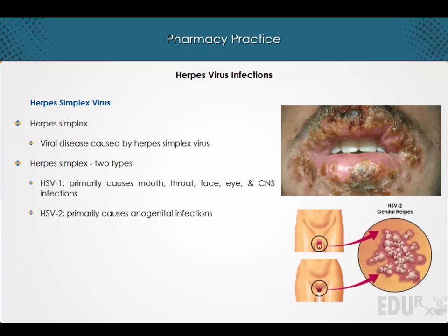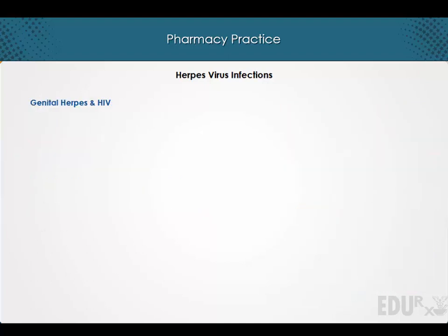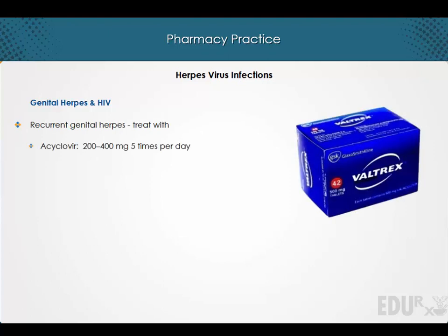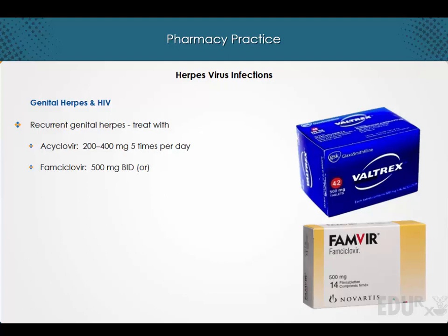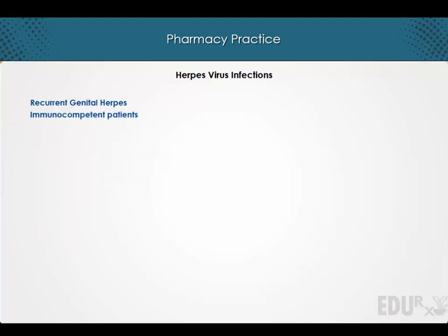Herpes simplex virus type 2 primarily causes anogenital infections. Recurrent genital herpes in HIV-infected patients can be treated with acyclovir 200 to 400 mg five times per day, famciclovir 500 mg twice daily, or valacyclovir 1 gram twice daily, for a period of five to seven days.